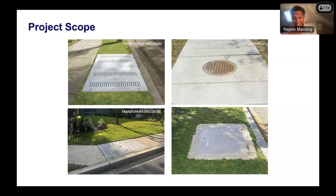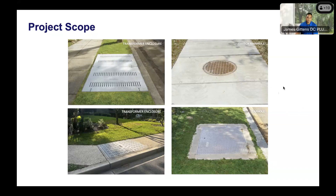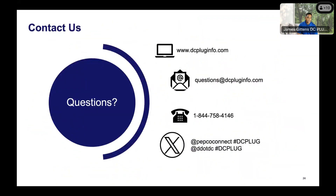Linda asked whether transformers are on poles in the alley as well. The DC Plug program is intended to remain in the public right-of-way. Alley poles are often on private property, and the team typically tries to avoid those. There do not appear to be any alley poles included in this feeder's project scope.